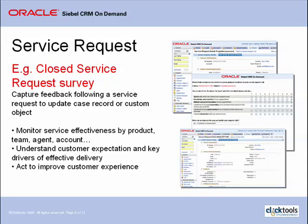Capturing feedback enables you to more effectively understand and improve the service factors that directly impact customer recommendation and loyalty. ClickTools can be used to track and compare service effectiveness across product groups, agents and/or teams. You can even set fields based on the information collected — for example, if someone gives you negative feedback, then record a follow-up task against the service request.